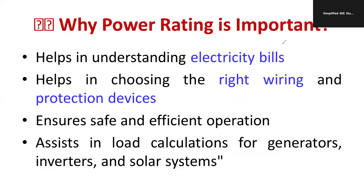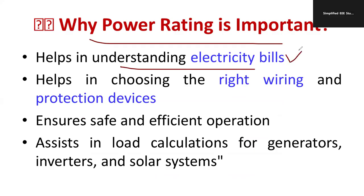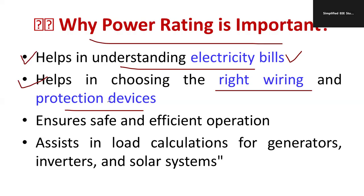Why do we consider power rating? First, it helps us understand our electricity bill. The electricity bill is calculated using power rating, the number and type of appliances, and the duration of usage, along with the cost per unit. Second, it helps in choosing the right wiring and protective devices — based on power rating we can calculate current, and based on current we can decide the wire size, such as 2.5 mm² or 1.5 mm². It also ensures safe and efficient operation.